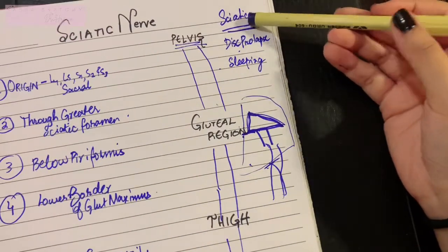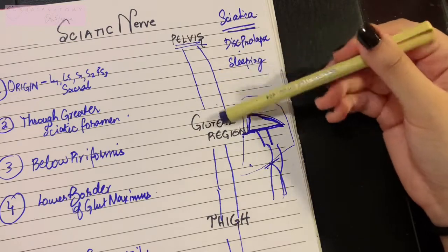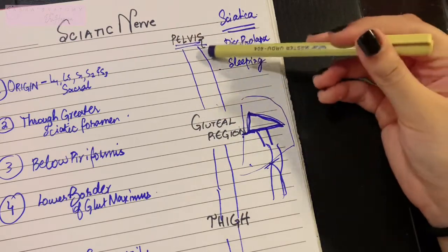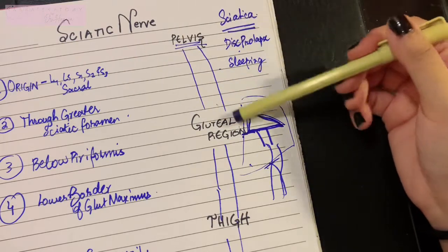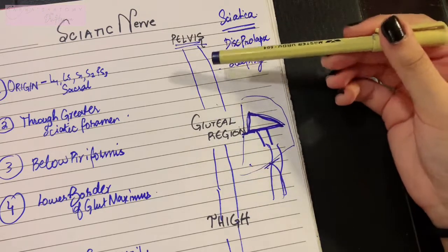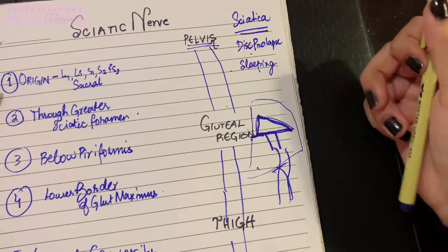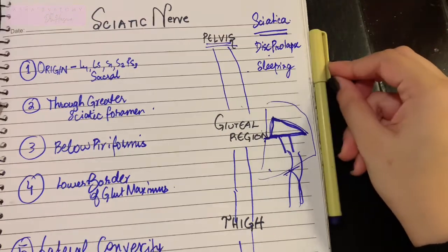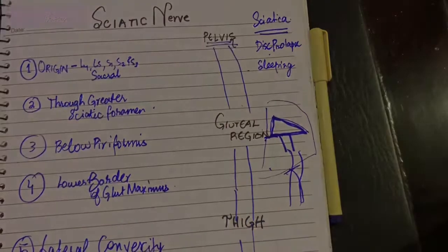Sciatic nerve injuries can occur when there is dislocation of the hip joint or if anybody stabs your gluteal region. Sciatic nerve can get injured and this can cause a lot of paralysis including foot drop. That was all for sciatic nerve. Do not forget to subscribe to my channel. Thank you for watching.